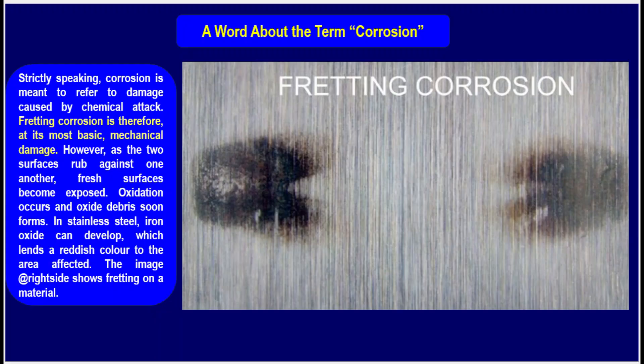A word about the term corrosion. Strictly speaking, corrosion refers to damage caused by chemical attack. Fretting corrosion is therefore at its most basic a mechanical damage. However, as the two surfaces rub against one another, fresh surfaces become exposed, oxidation occurs, and oxide debris soon forms. In stainless steel, iron oxide can develop, which lends a reddish color to the affected area. The image on the right side shows fretting on a material.